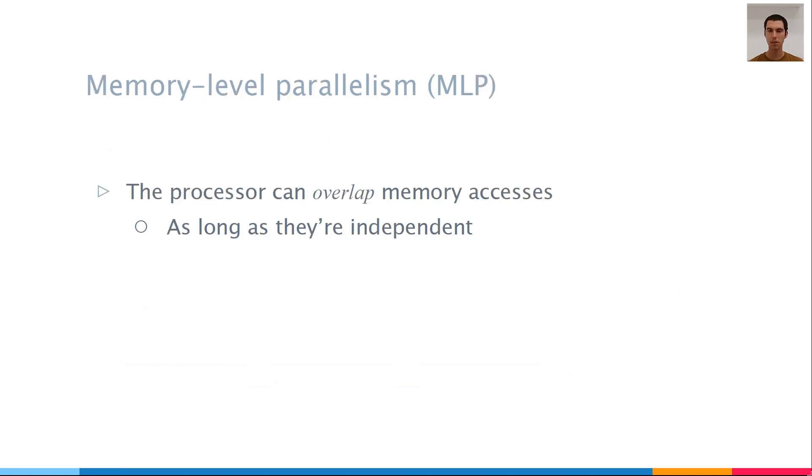To accelerate memory accesses, modern processors have a feature called memory level parallelism, or MLP. This feature allows the processor to perform several memory accesses in parallel, as long as they are not dependent on each other. Let's see an example.